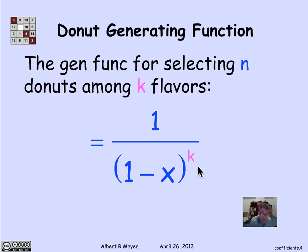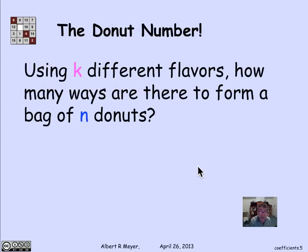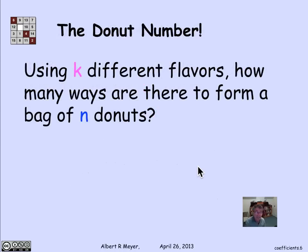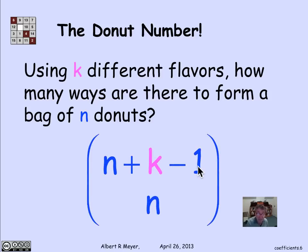Well, by the convolution counting rule, that coefficient is exactly the number of ways to select n donuts with k flavors. And we know the answer to that because we worked it out when we were doing counting arguments. It is (n plus k minus 1) choose n.